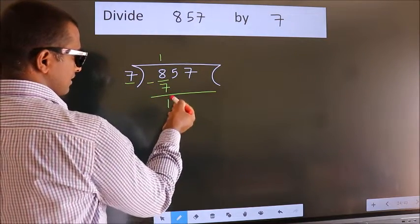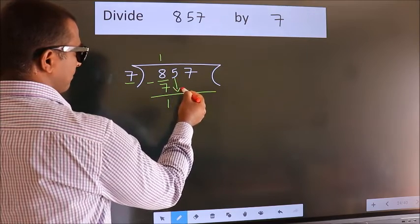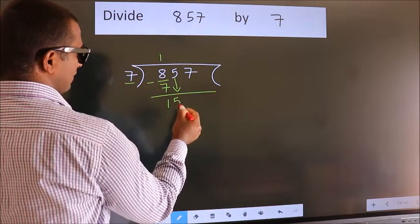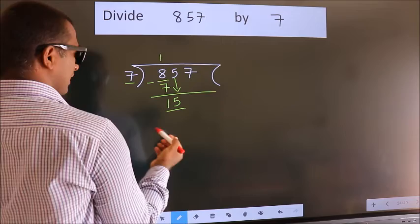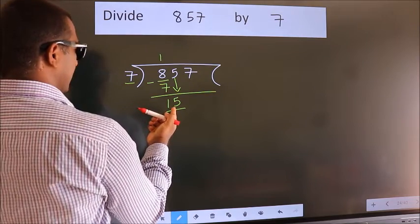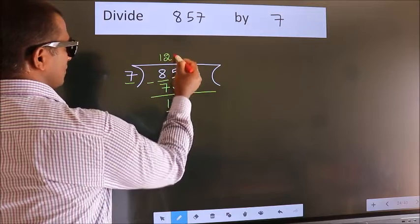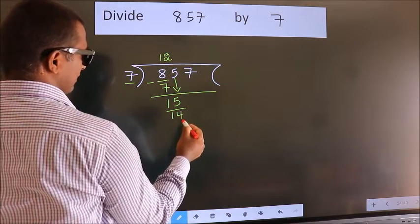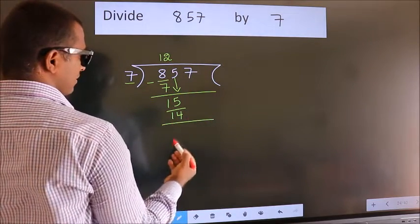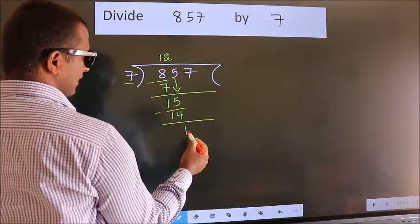After this, bring down the beside number. 5 down, so 15. A number close to 15 in the 7 table is 7 twos, 14. Now, we subtract. We get 1.